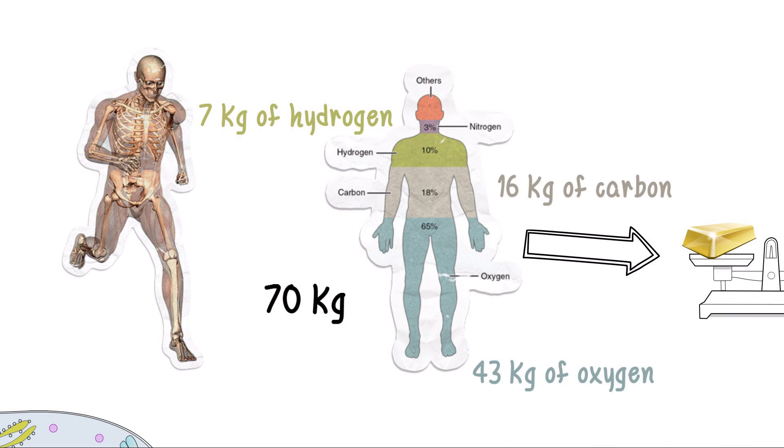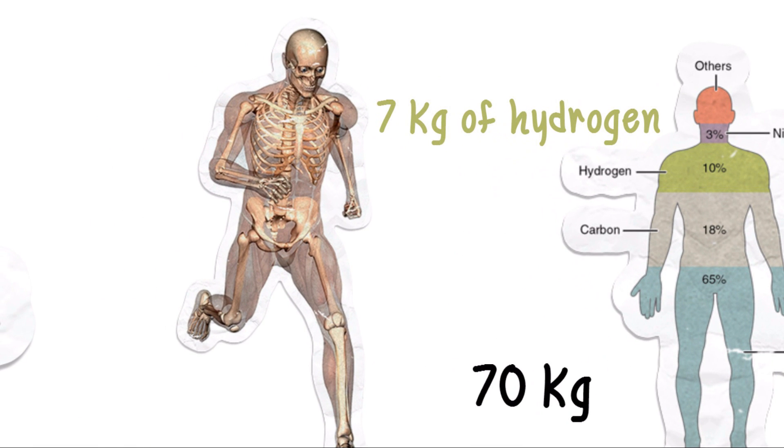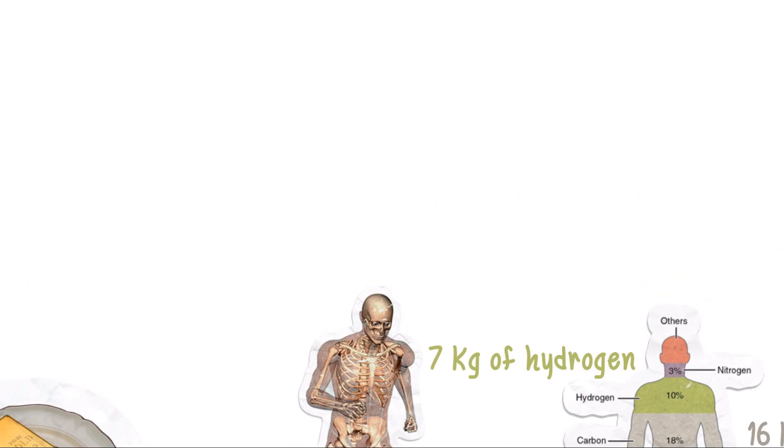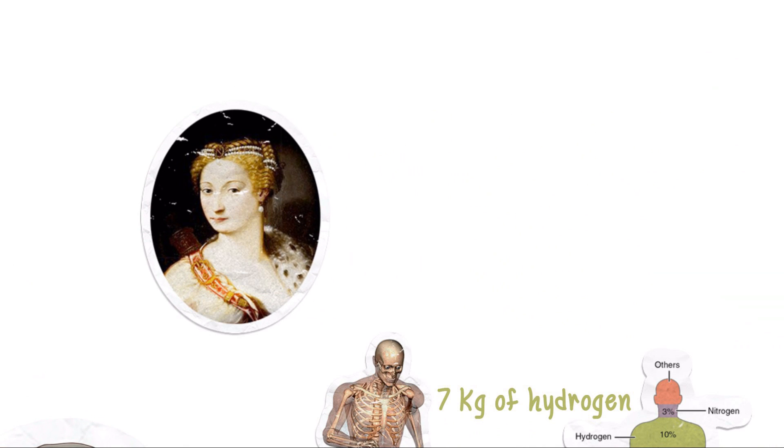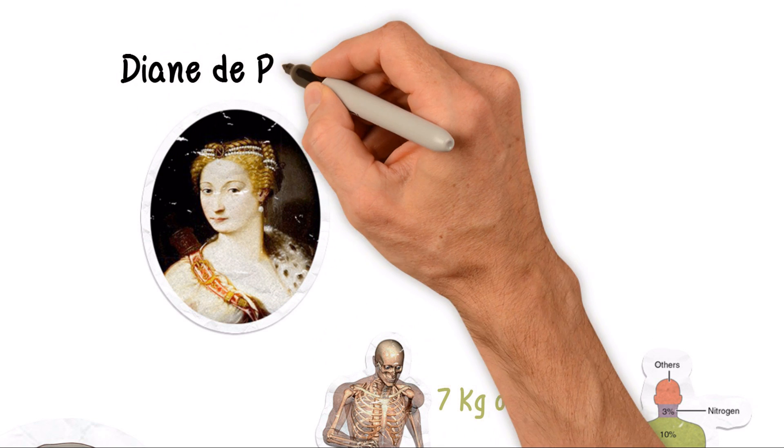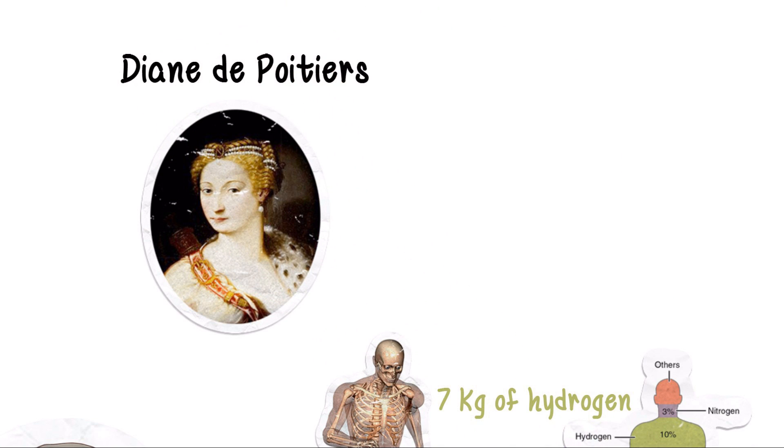So even if it was possible to extract all the gold from inside you without harming yourself in the process, the financial return wouldn't be worth your while. Diane de Poitier, the mistress of French King Henry II, drank liquid gold to keep herself looking young.